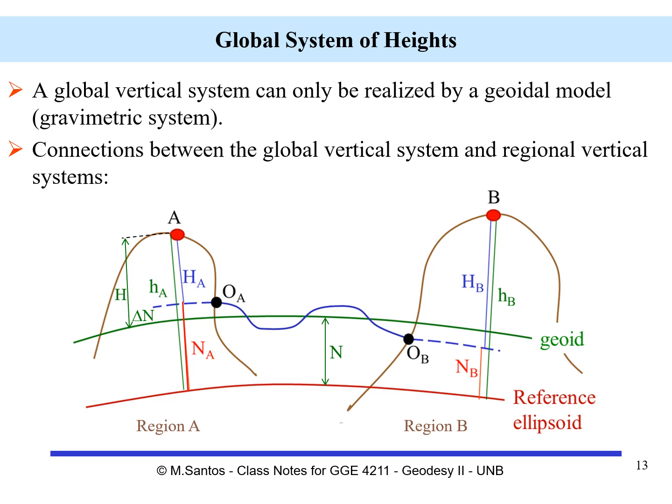Looking at the left-hand side for this particular point A, we have the orthometric height of A referred to the tidal datum. We have the geodetic height, lowercase h, from GNSS. And we would have a regional geoid for this particular region, with the geoidal height N represented in red. A similar situation exists for the right-hand side, region B.